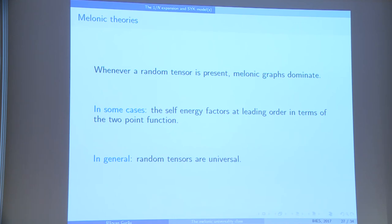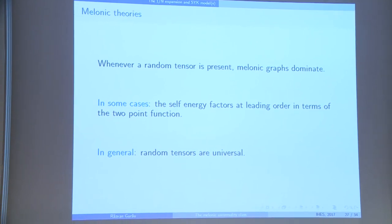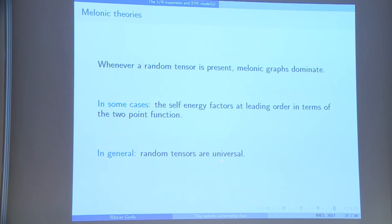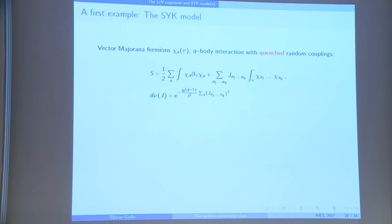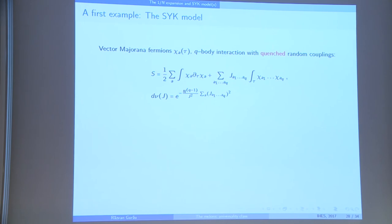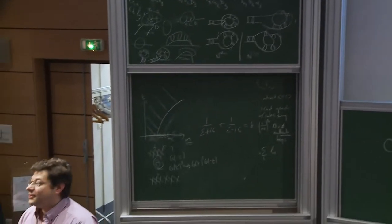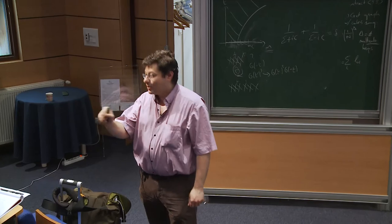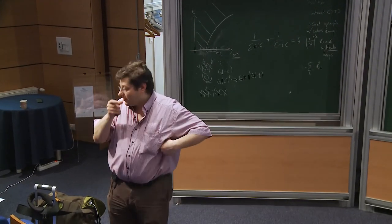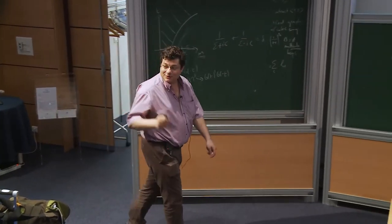A question from the audience: is the factorization of correlators to leading order a property of random matrices as well? The answer is yes — that is freeness. But here we have an even stronger property than freeness for random tensors, which will be addressed on the last transparency.